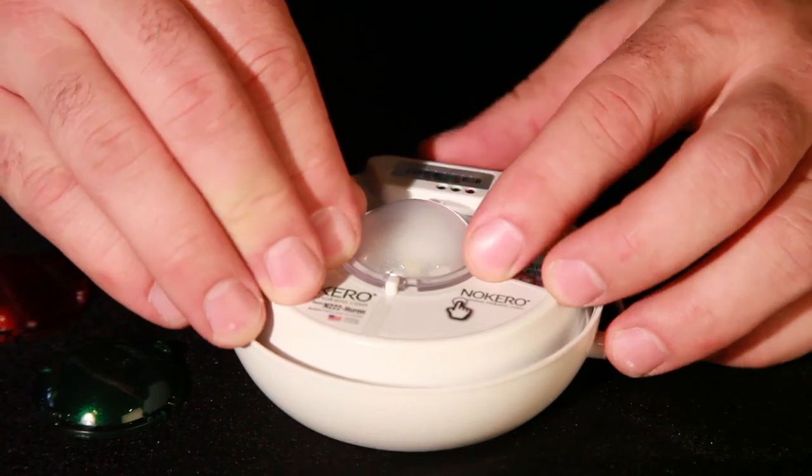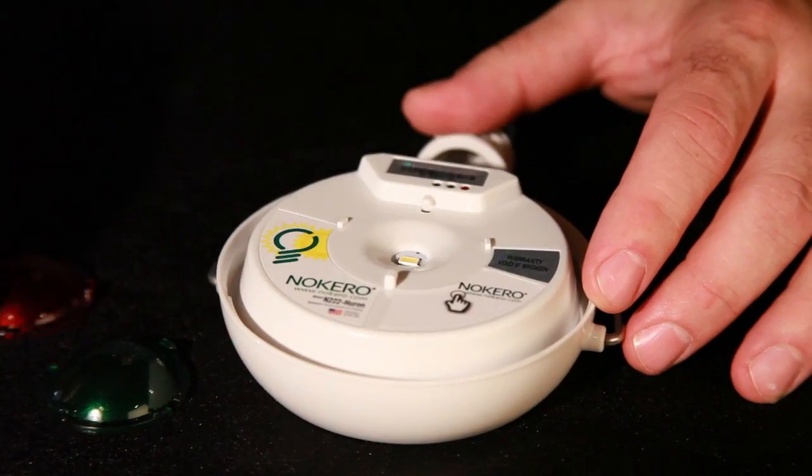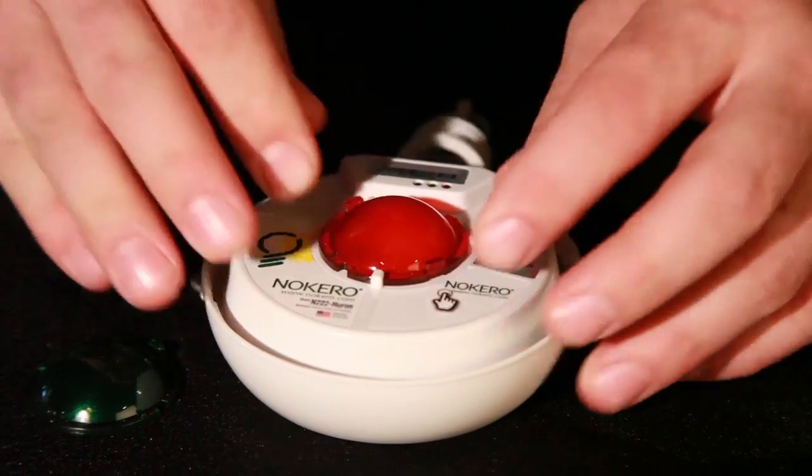The Nocaro N222 is provided with these three lenses. One is a diffuser, one is green, and one is red.